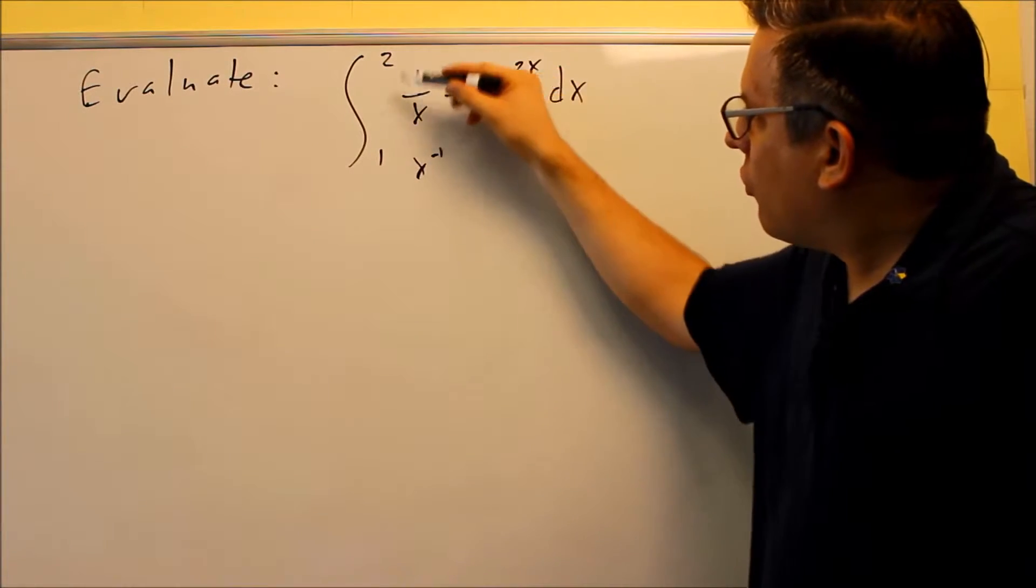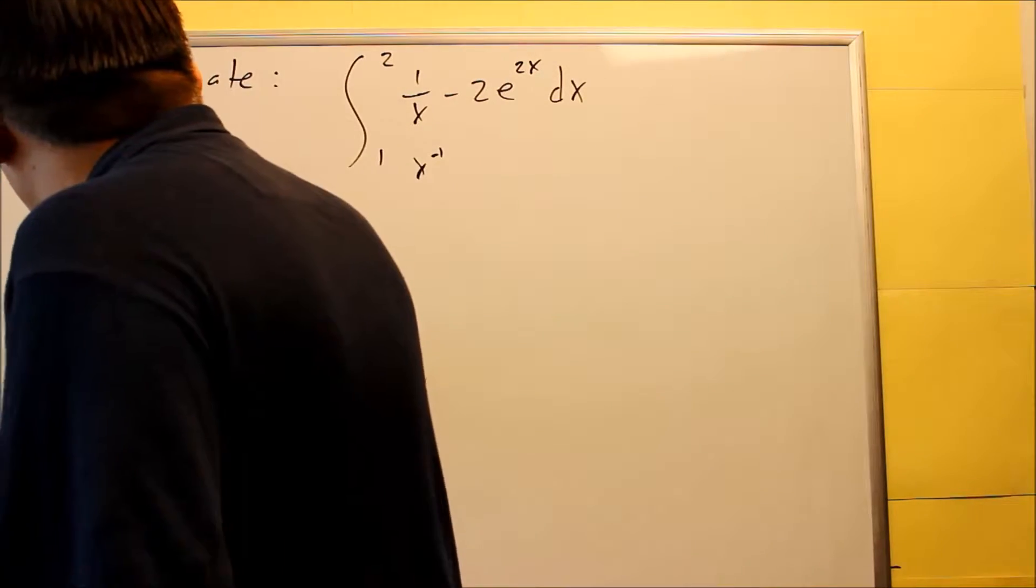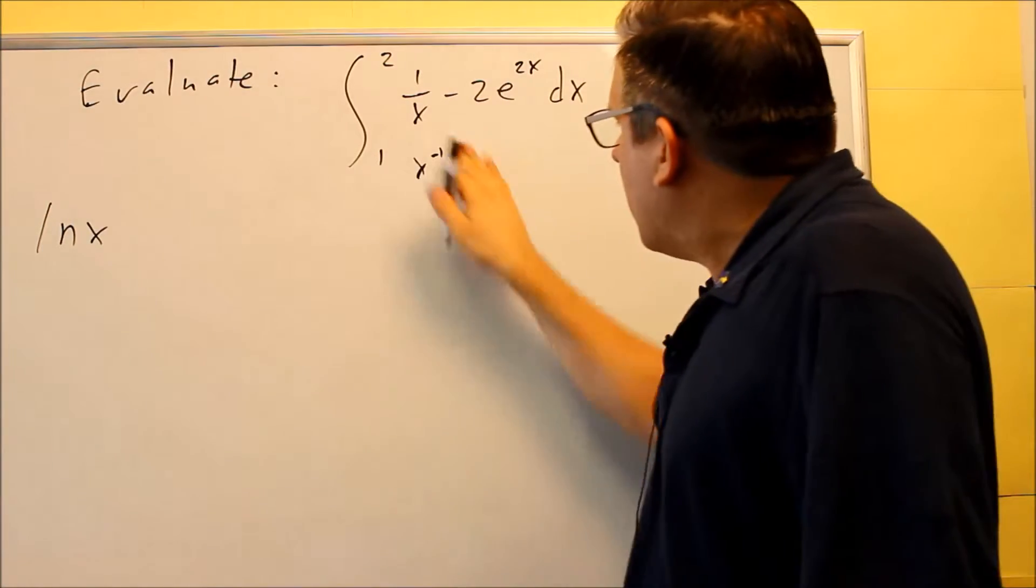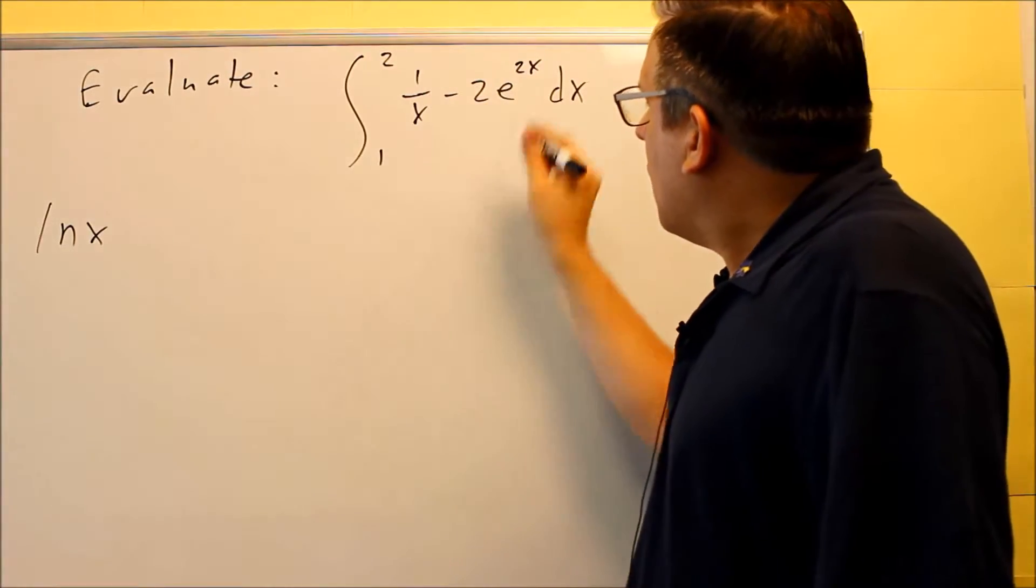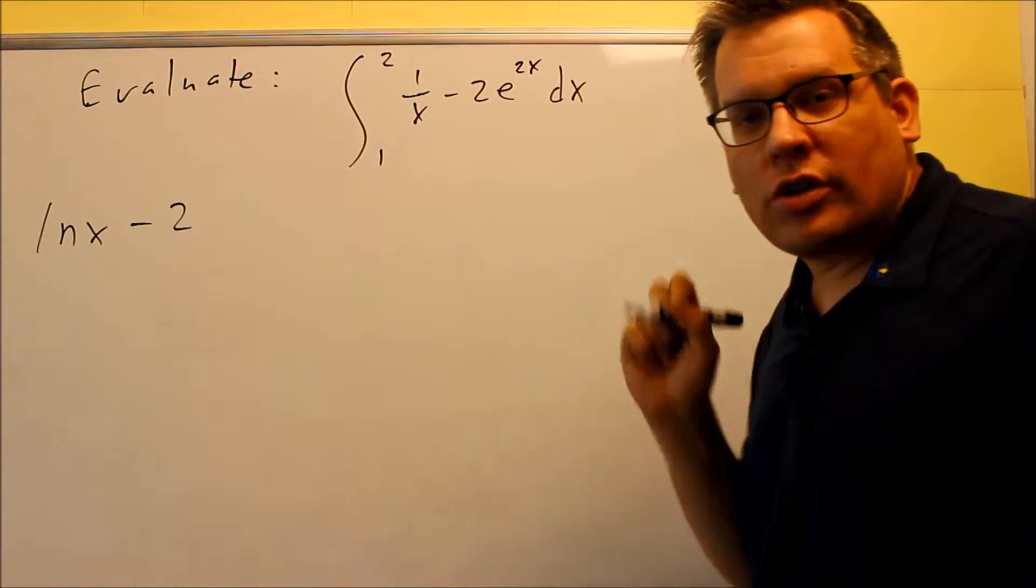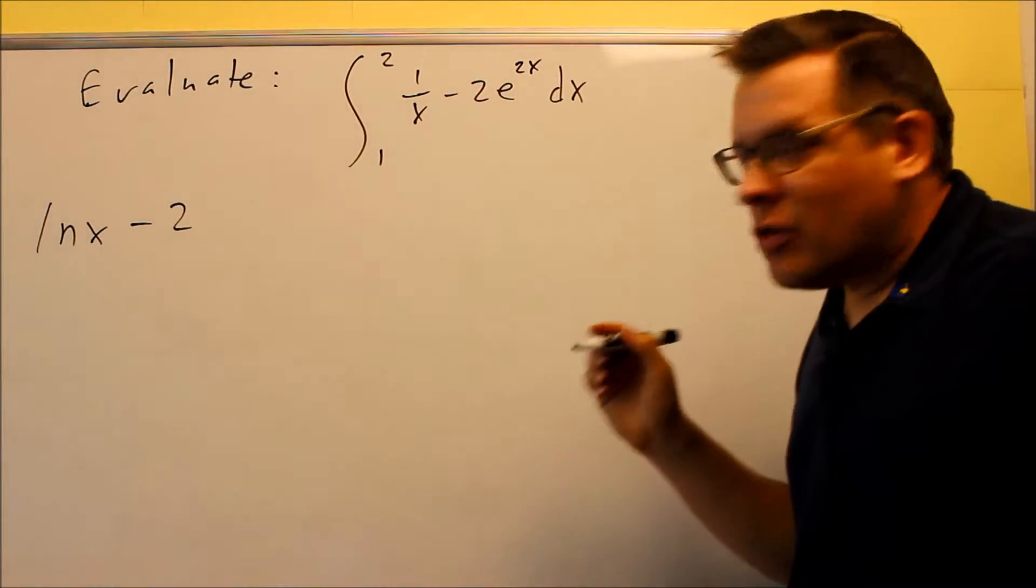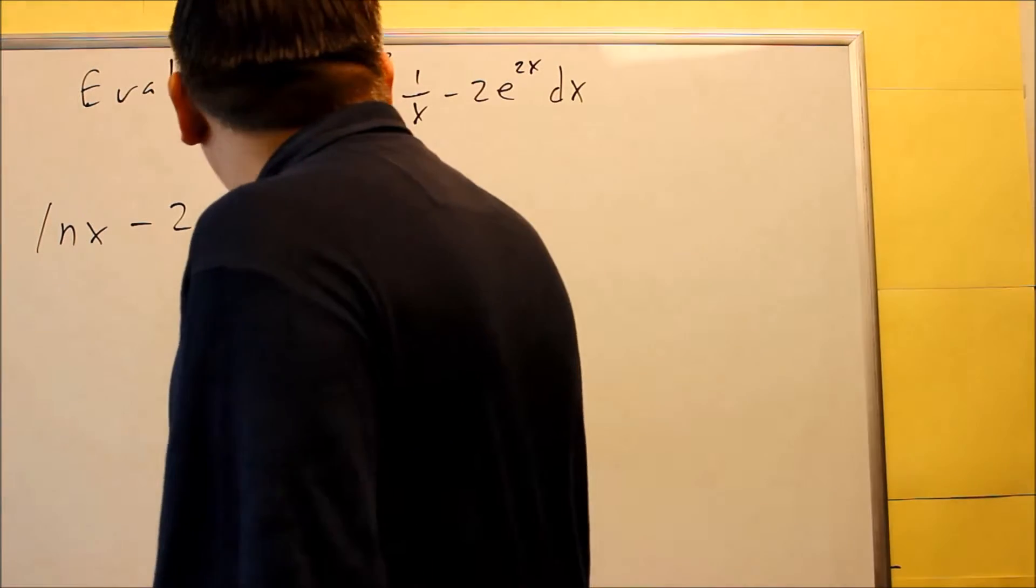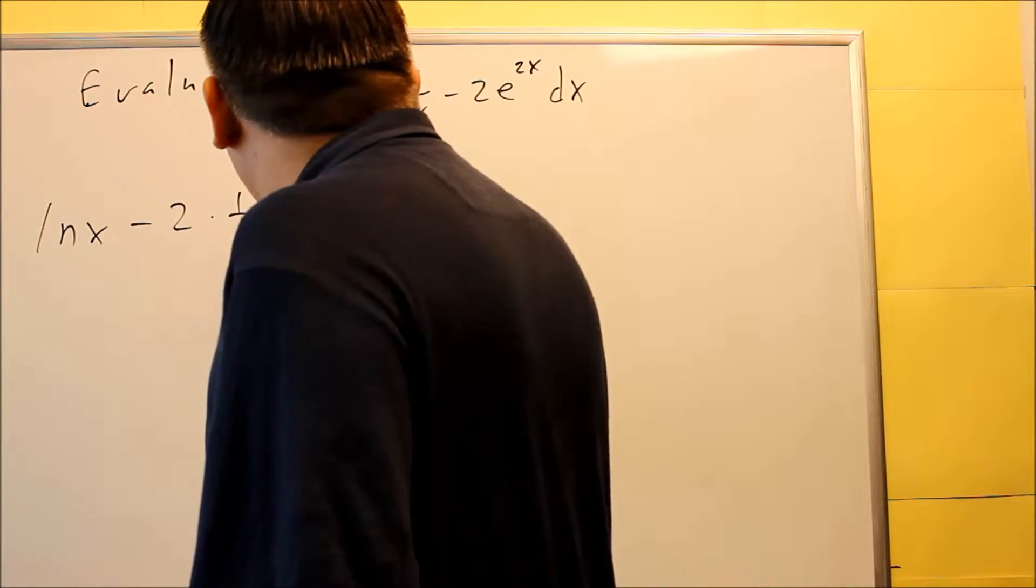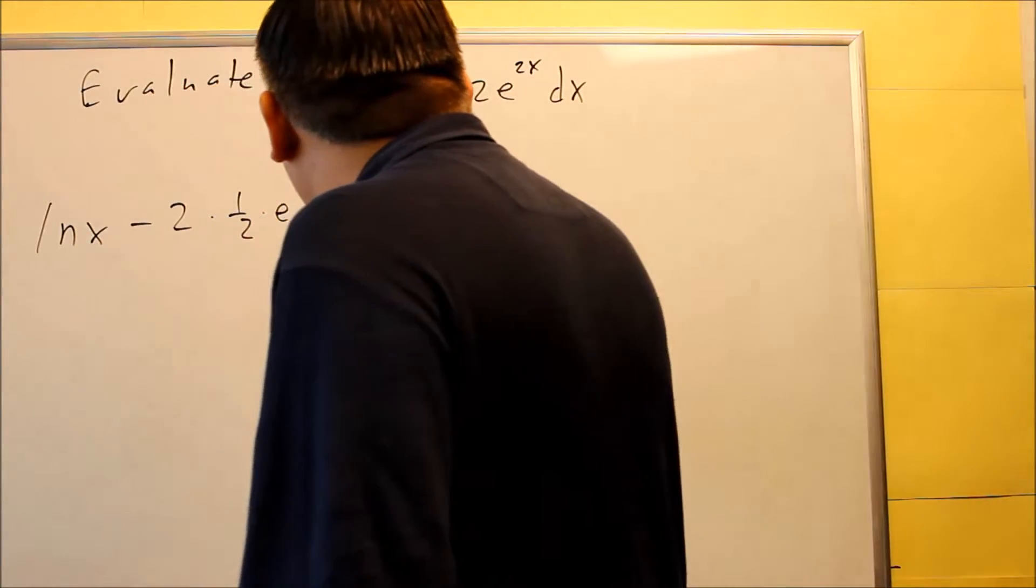Okay, so if you have 1 over x, that's going to turn into natural log of x. Now I'll take care of this one. I have minus 2, and I'm going to integrate e to the 2x. That's that one that involves the k value. It's going to be 1 over k, then e to the 2x. I'm going to do 1 over 2 times e to the 2x. And that takes care of that anti-derivative.